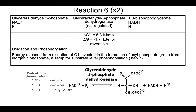Remember that the preparatory phase ended with two molecules of glyceraldehyde-3-phosphate. Each of them are three-carbon molecules — remember glucose is a six-carbon molecule. One molecule comes from carbons one, two, and three of glucose, and the other comes from carbons six, five, and four. At this stage, what we're doing is oxidizing this glyceraldehyde-3-phosphate and at the same time phosphorylating it.